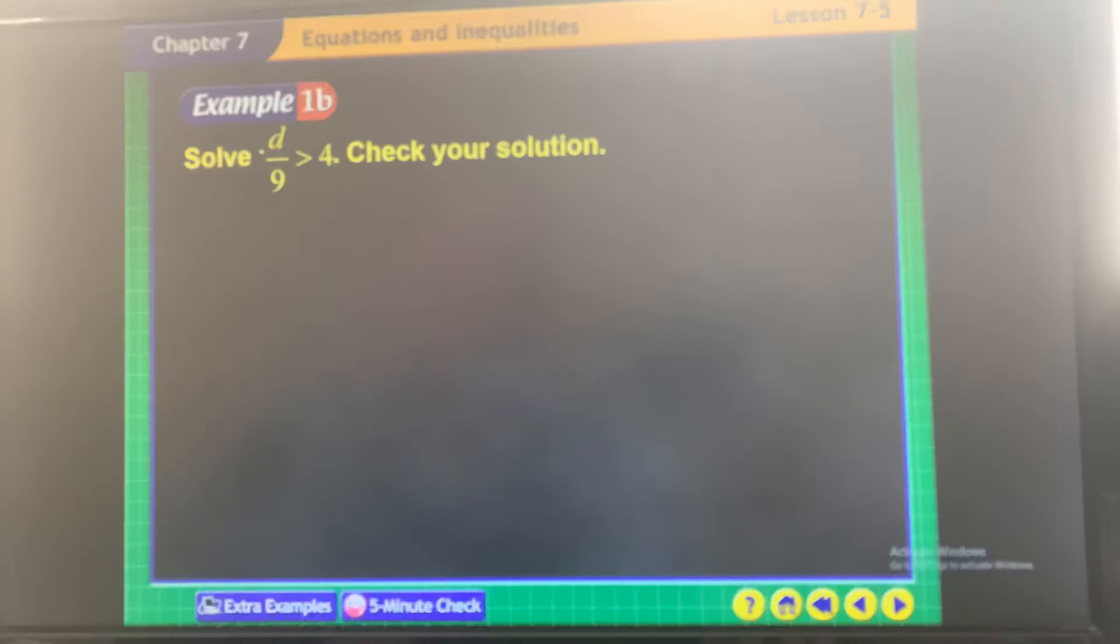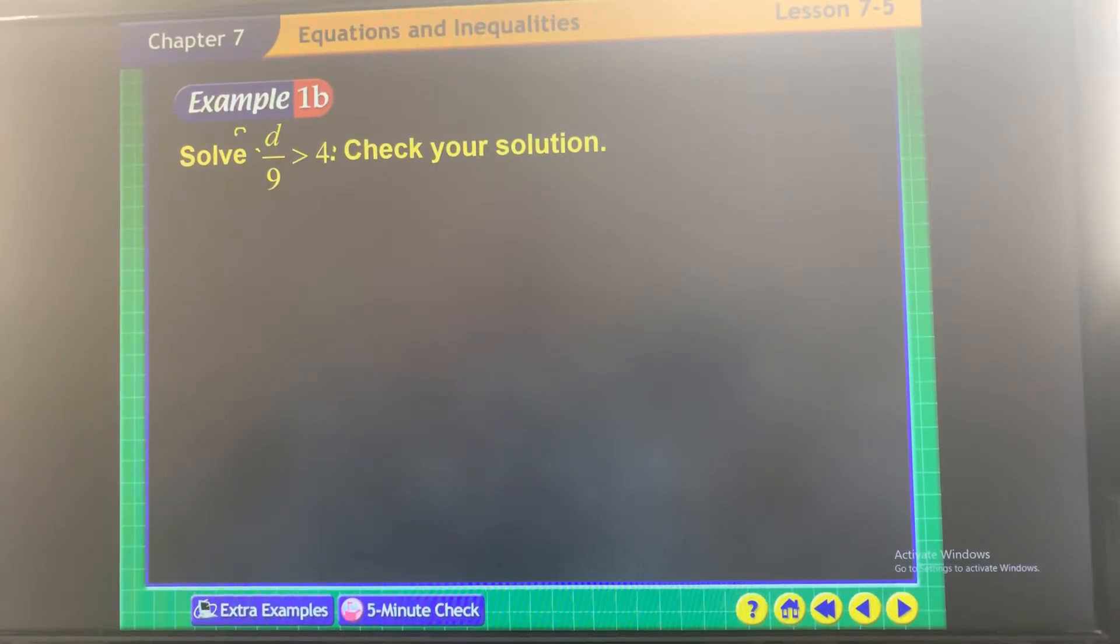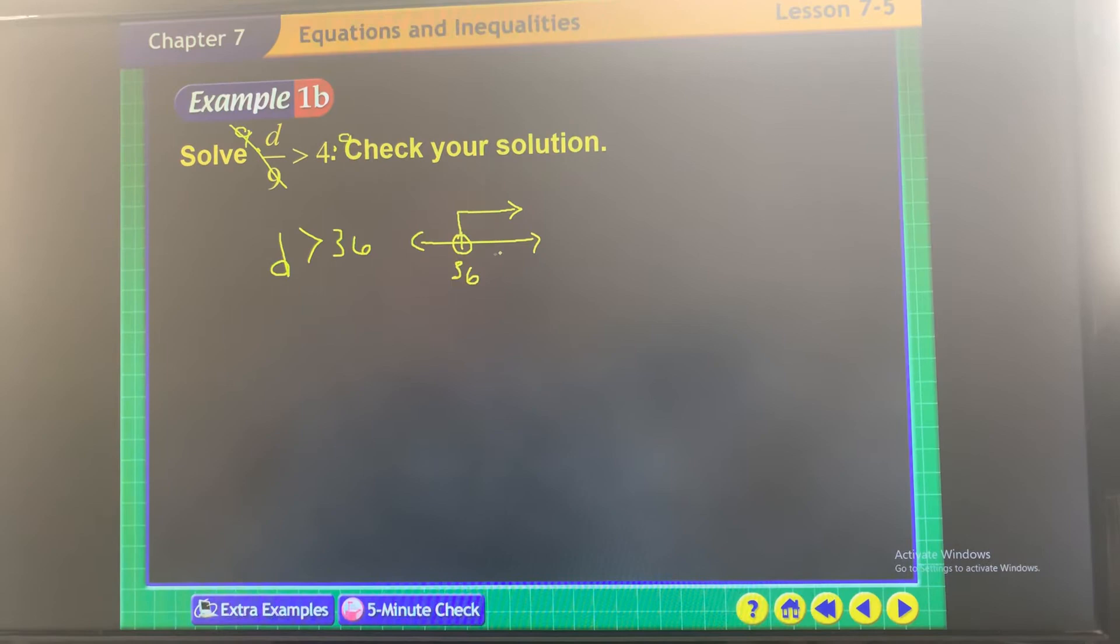Division. Undo division with multiplication, so you're going to multiply both sides by 9. Make sure you put 9 above it, not underneath, so you can show cancel. D is every value greater than 36. And then of course graph it. I have 36, it excludes 36 because there's no equal sign, and it's everything to the right. Now pick a number greater than 36 that gets along with 9. Don't pick a number that ends up with a decimal or a fraction. Pick a number that gets along, is divisible by 9. Well, 45 would work, so let's do 45.